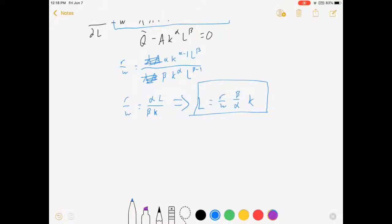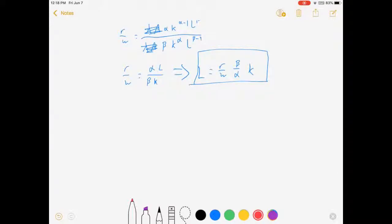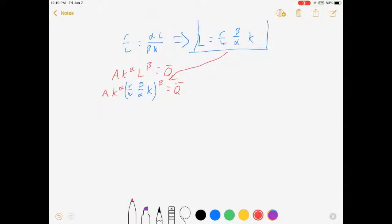Cool, now we can go a little farther. We've got our ratio but we don't have exact quantities yet. So for our next step I want to go back to our constraint and we're going to substitute this result into it. We know that AK to the alpha L to the beta equals Q bar. Well that's A times K to the alpha times R over W beta over alpha K to the beta, which simplifies to A times R beta over W alpha to the beta times K to the alpha plus beta equals Q bar.